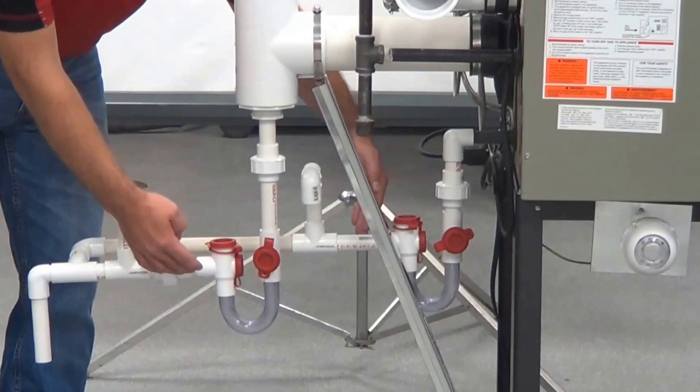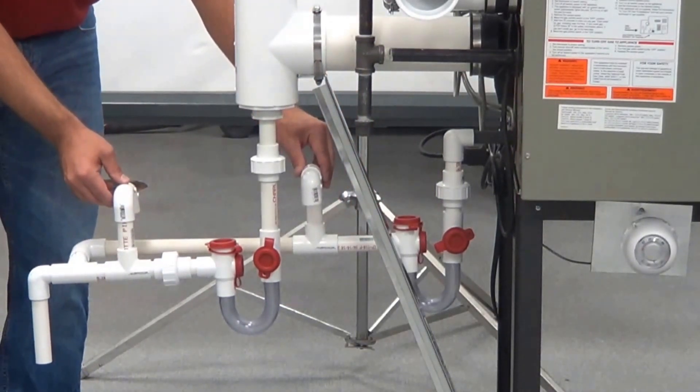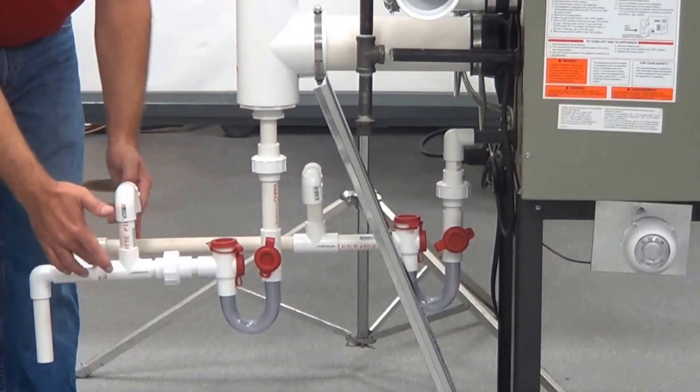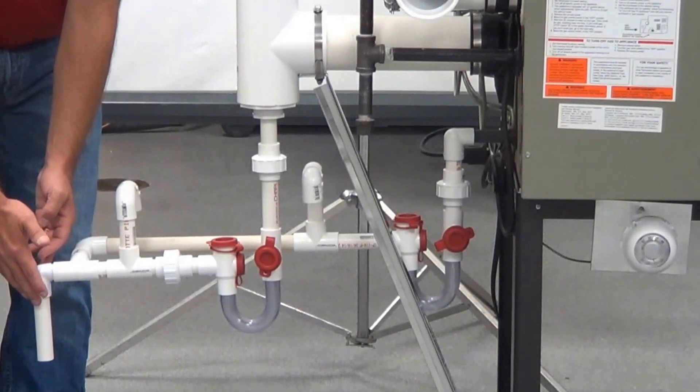As we come out of the trap, you'll see that we have vacuum breakers in here that are critical that we put in to relieve the pressure. And we come down and we can adjoin these to one central drain pipe.